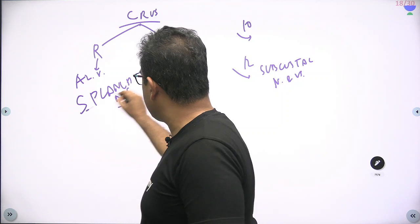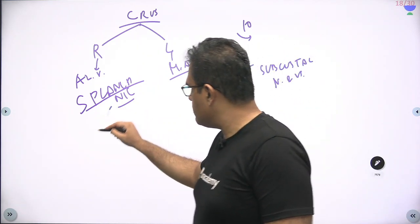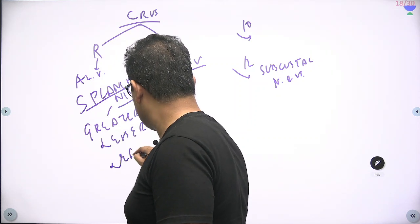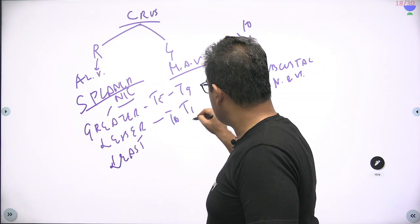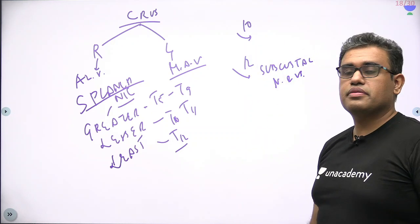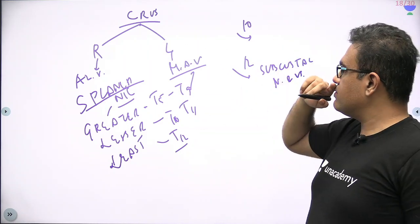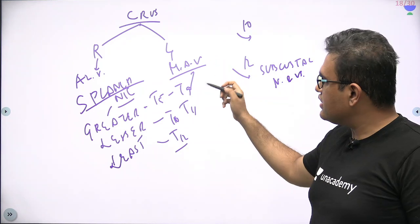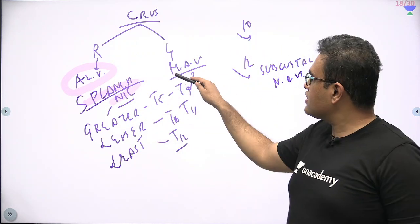The splanchnic nerves are medial to the sympathetic chain and pierce both the right and left crura of the diaphragm. Remember — which splanchnic nerves? Not all of them. These are the greater, lesser, and least splanchnic nerves, from T5-T9, T10-T11, and T12 respectively — not the lumbar or sacral splanchnic nerves. You can't go below T12 because below T12 you have already entered below the diaphragm. So greater, lesser, and least splanchnic nerves pierce both sides of the crura.